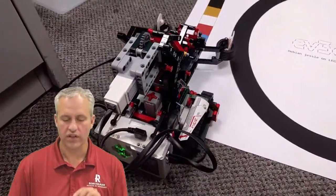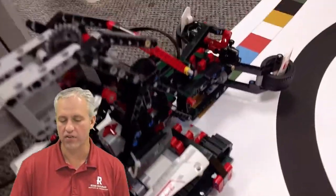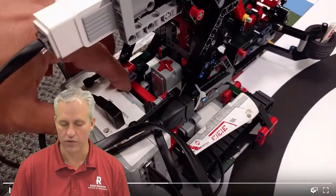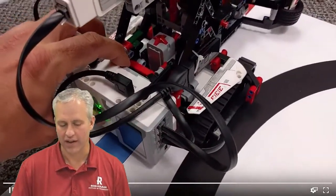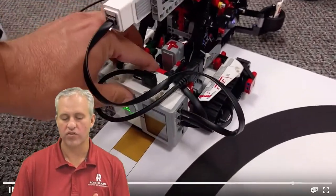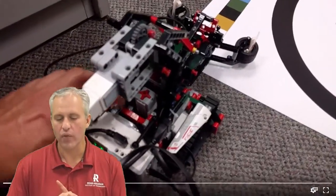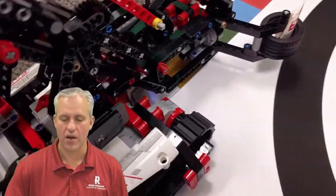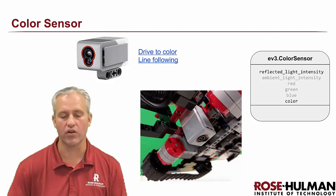All right, there it goes. So you can see that I pressed a button on it and it drove to that color. And then I pressed a different color. So it said 'seeking blue', so it's going to drive until the sensor is over blue. 'Seeking black' is what it said there, and so it found black. It's basically driving down this line until it finds the color that it's looking for. And that's using this to determine what color it's over.